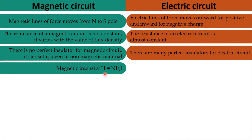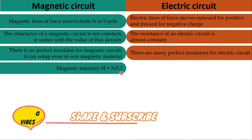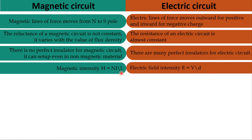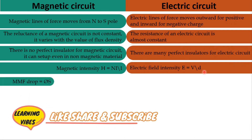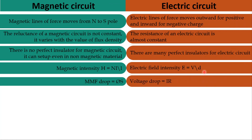Magnetic intensity H equals NI divided by L, where N is number of turns, I is current, and L is the length of the magnetic material. Similarly, electrical field intensity E equals V divided by d, where V is potential and d is distance. MMF drop equals flux φ times reluctance S, and the analogous voltage drop in an electrical circuit equals current I times resistance R.